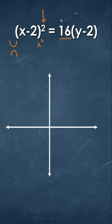Since we have a positive value for this 4p right here, that's going to tell us that we're going to have an upward shaping parabola.